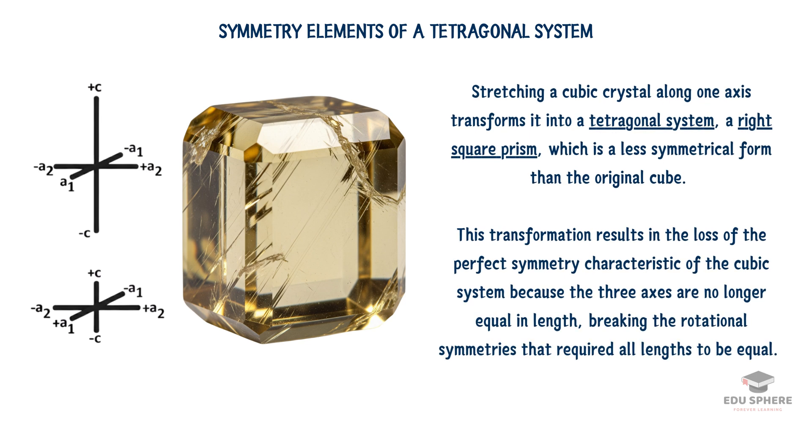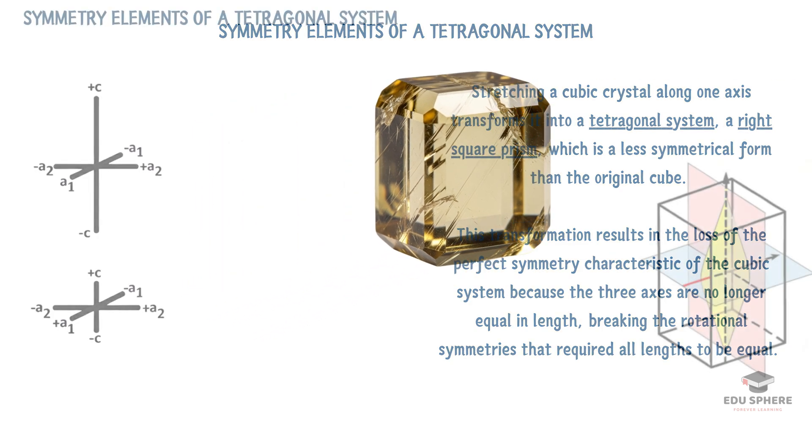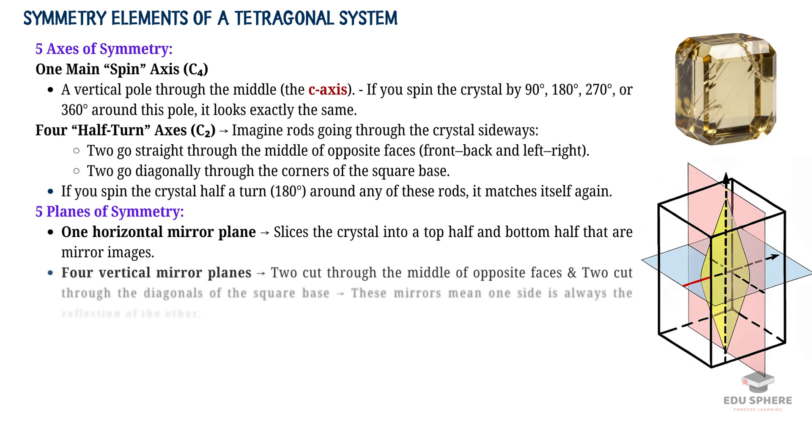By stretching that one axis, we've lost some of the perfect symmetry of the cubic system. We are now down to 5 planes of symmetry and 5 axes of symmetry in the normal class.